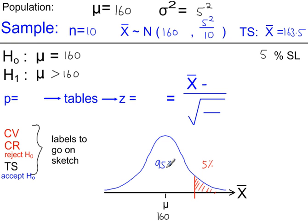So this is our critical region, where we would reject H₀. And this is our acceptance region. So now we need to work out the critical value that goes here. And that comes from the standardising formula. So this value here, the sample mean, will be our critical value.